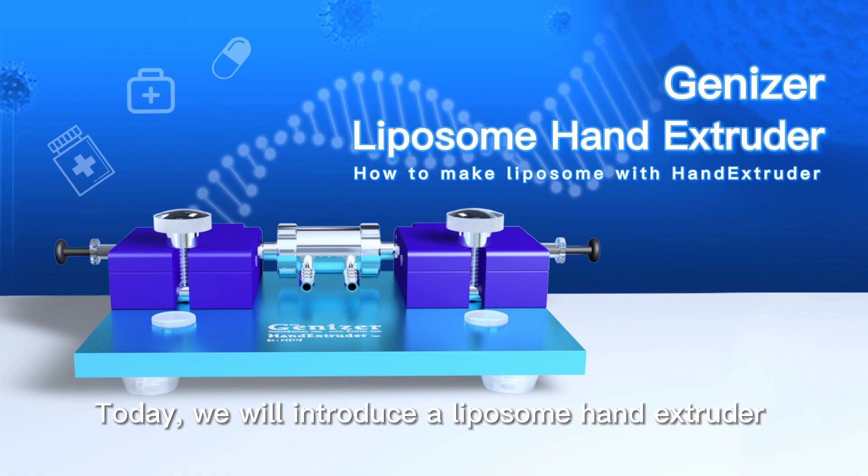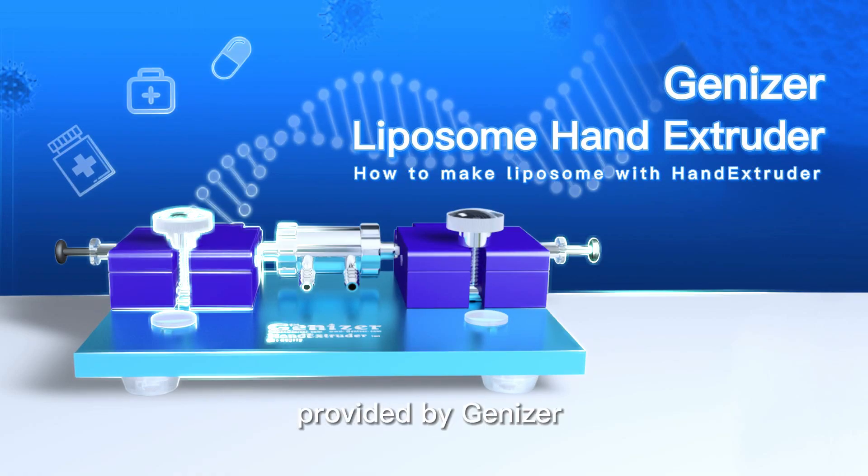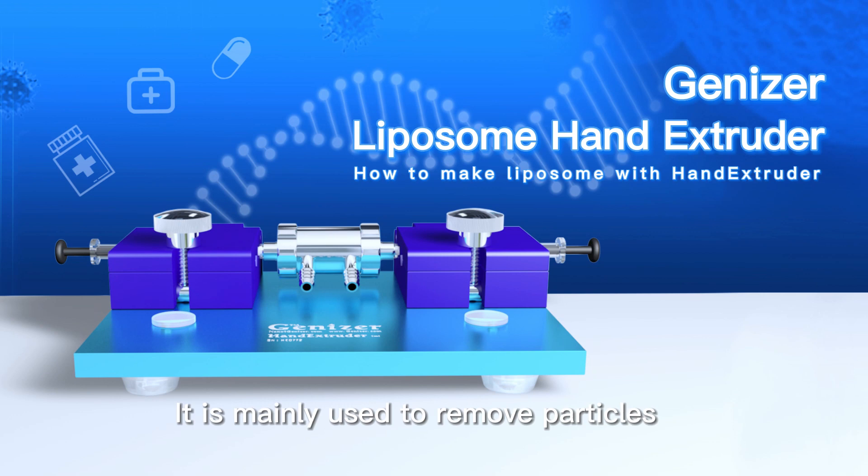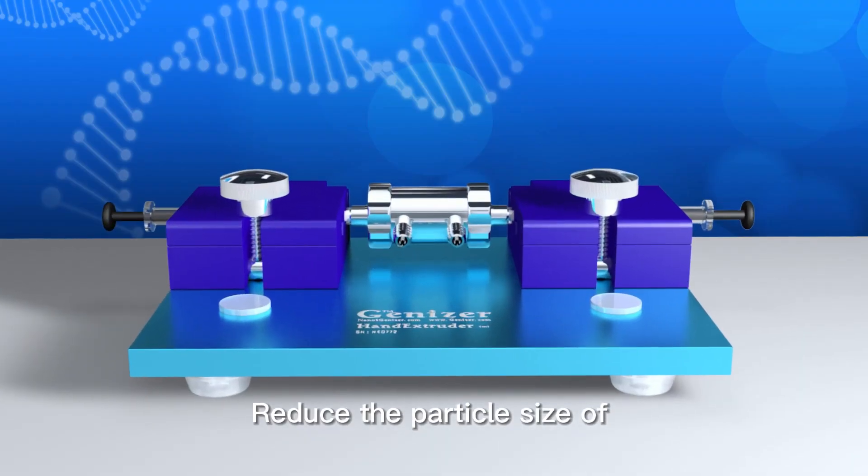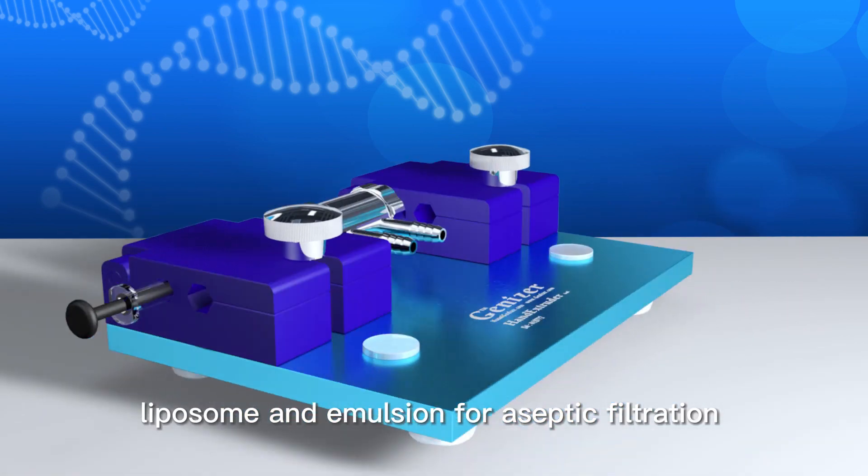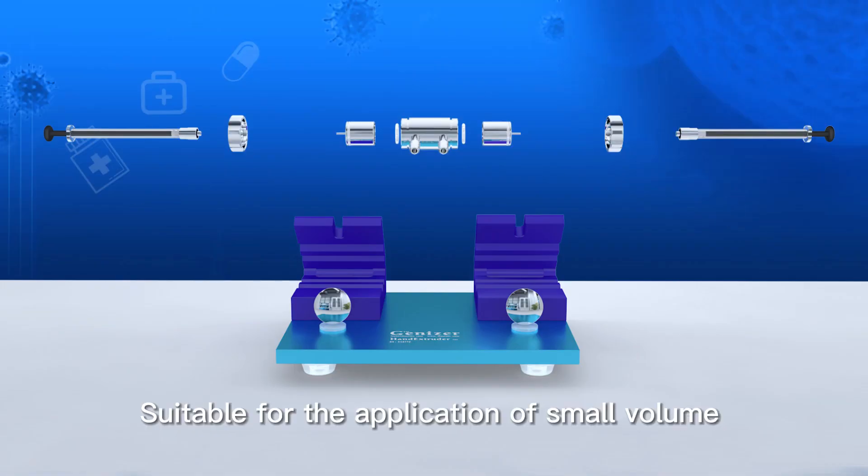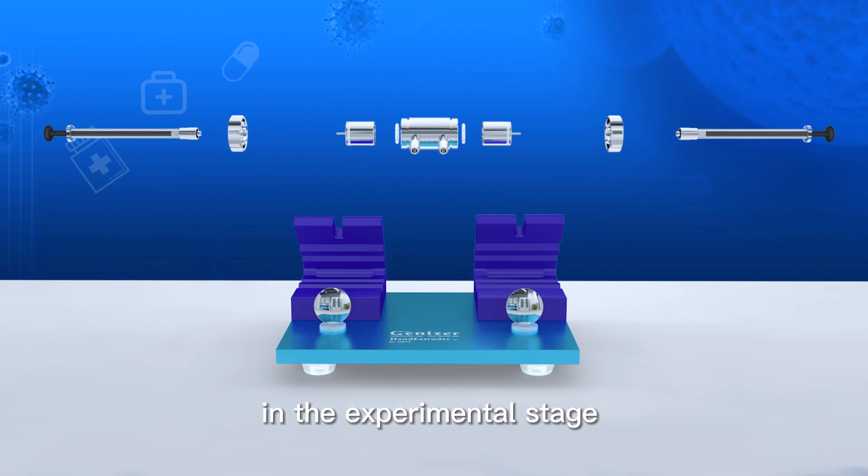Today, we will introduce a liposome hand extruder provided by Genizer. It is mainly used to remove particles and precipitates in products, reduce the particle size of liposome and emulsion for aseptic filtration. Suitable for the application of small volume in the experimental stage.